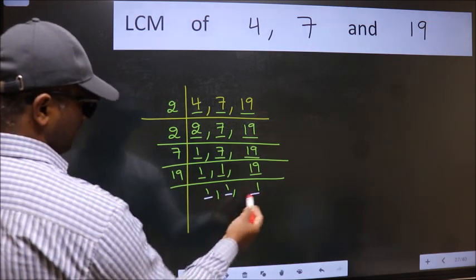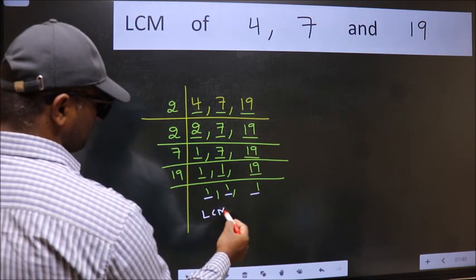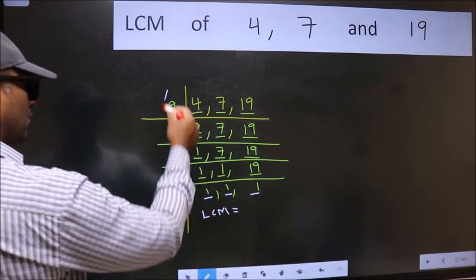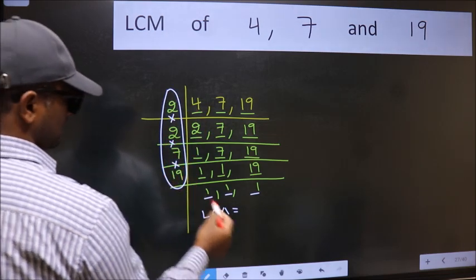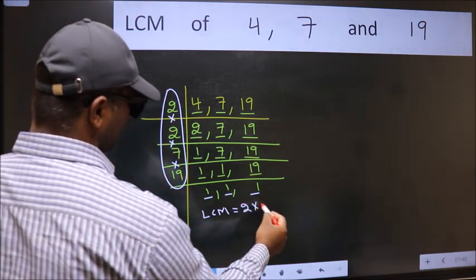So our LCM is the product of these numbers that is 2 into 2 into 7 into 19.